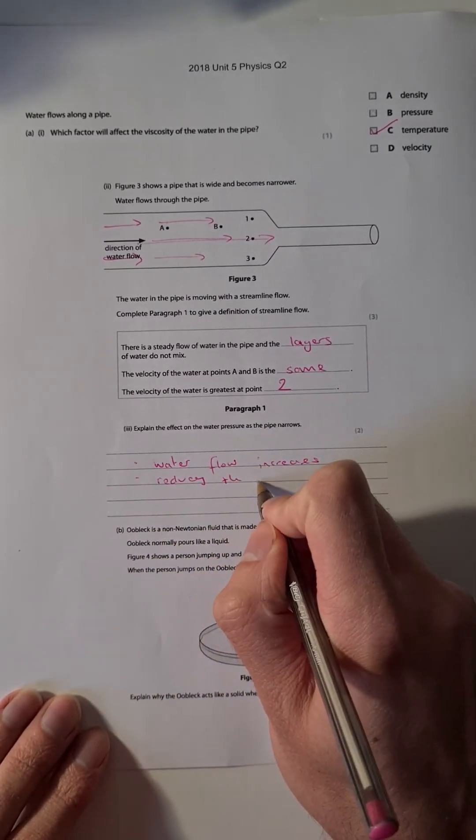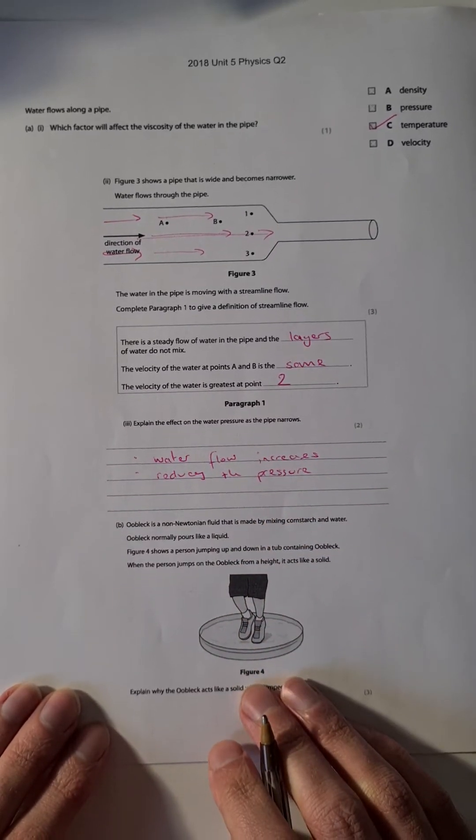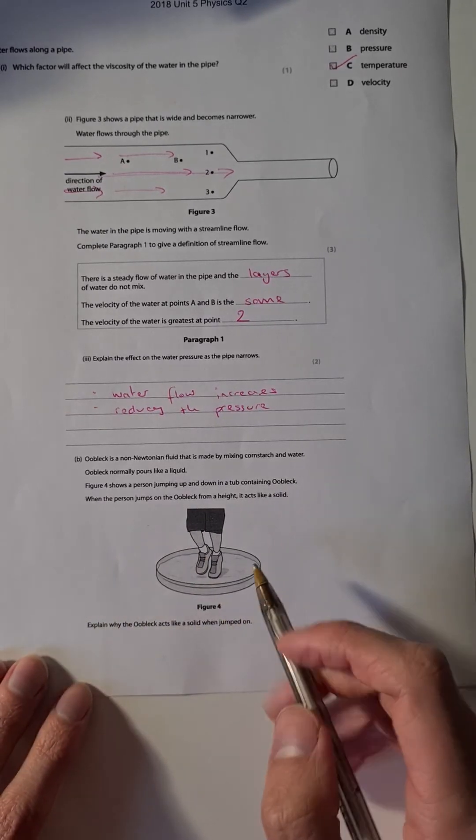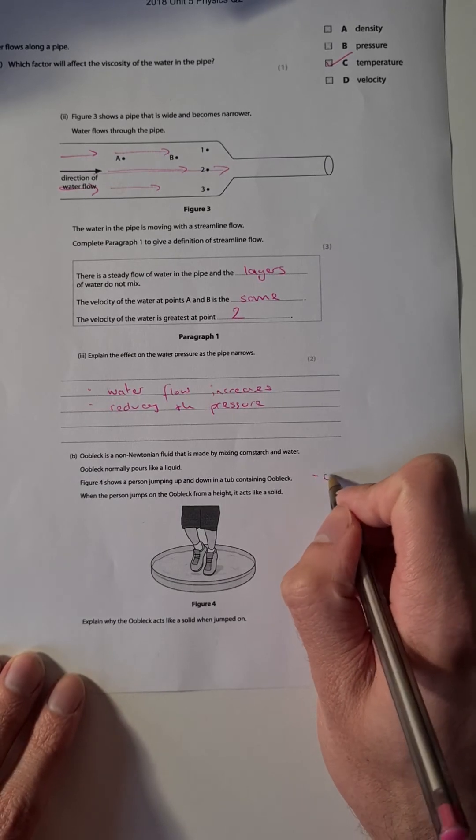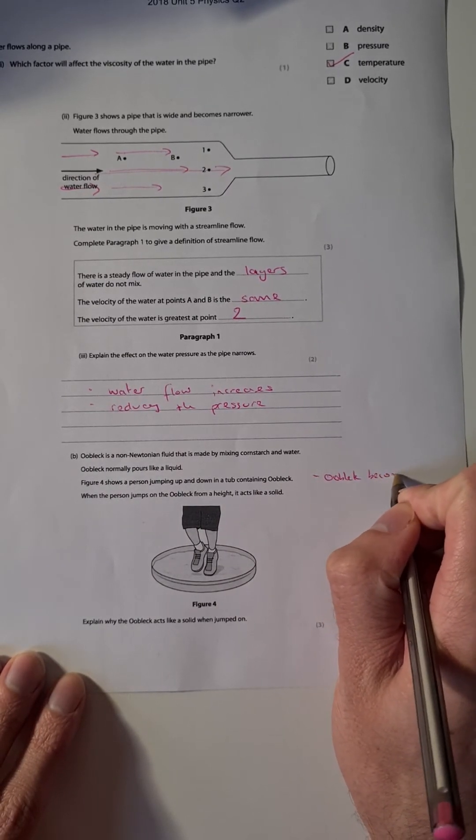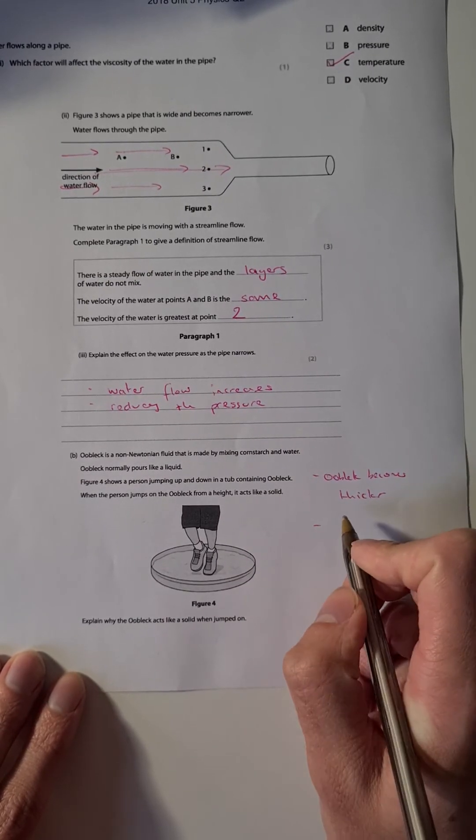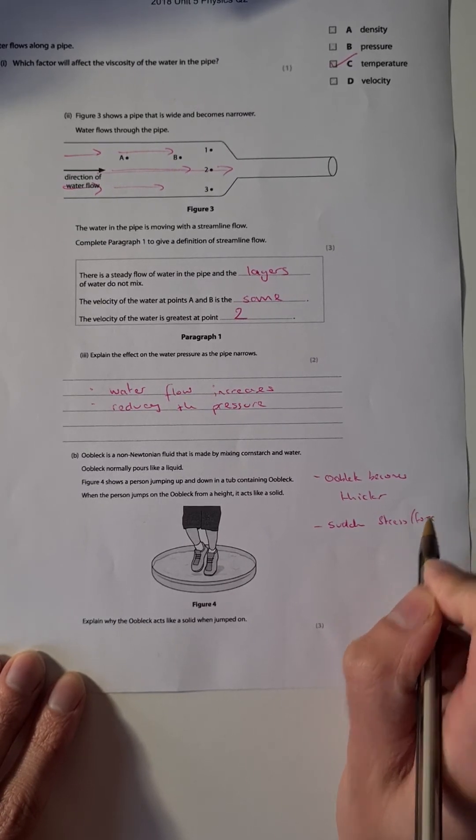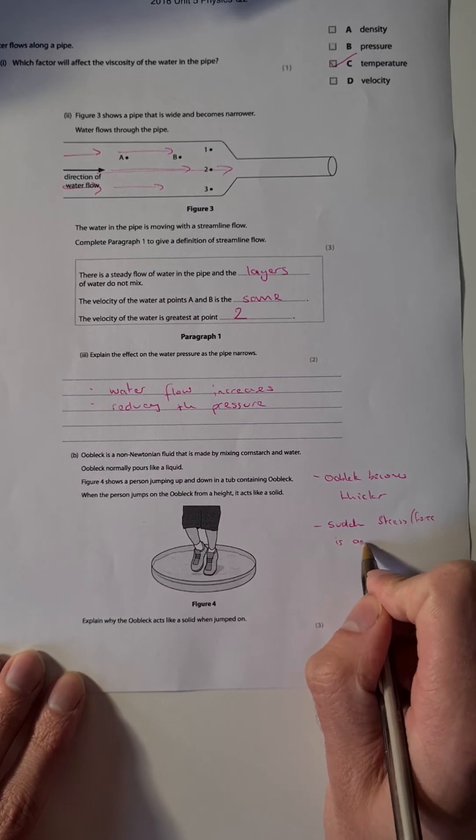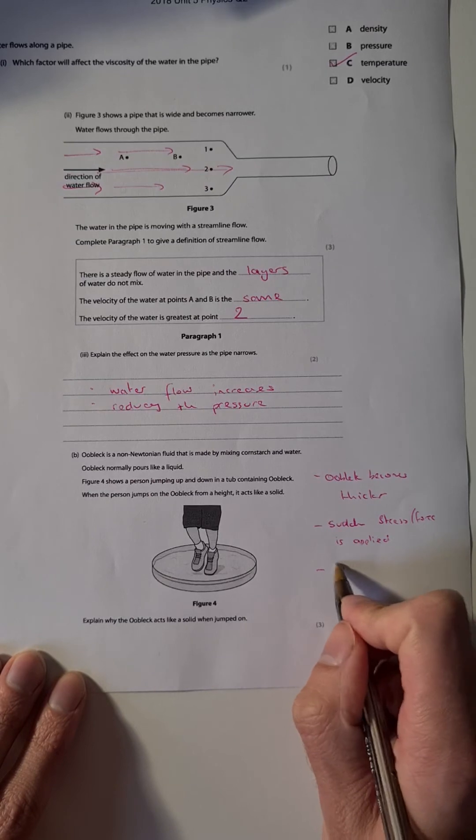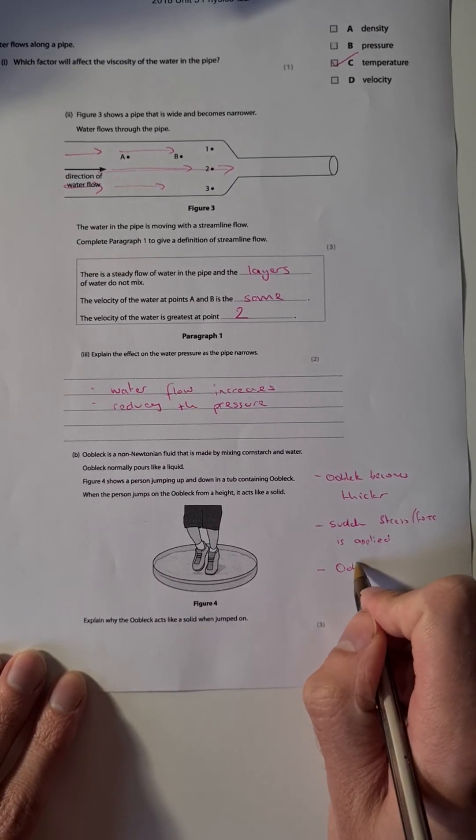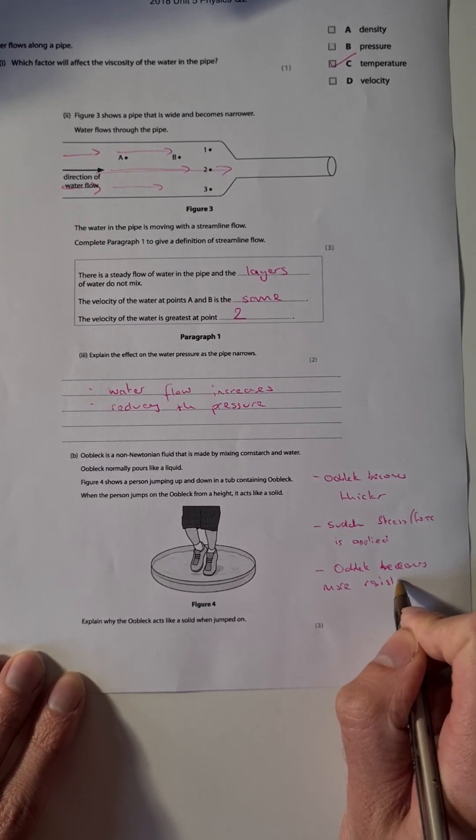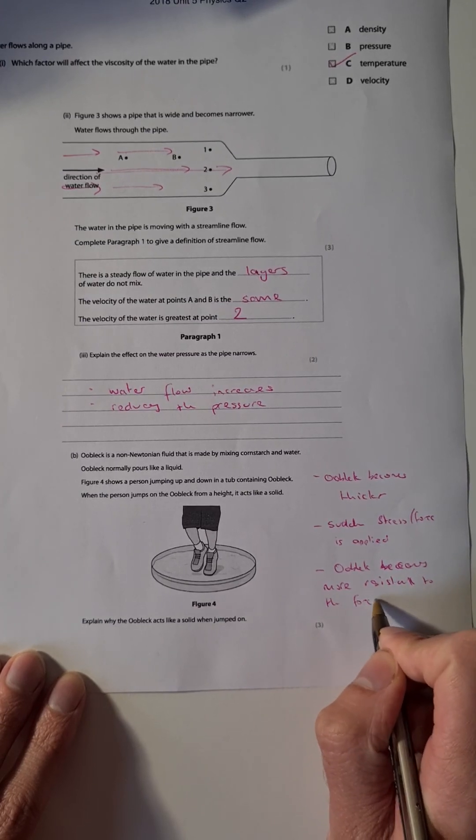Okay, then finally we've got our non-Newtonian fluid. So normally it's liquid, but if you jump on it, it suddenly turns into a solid. So that's what we need to point out - that it becomes thicker if you jump on it. This is because if you apply a stress on it, so sudden stress or force - if we apply that, some stress or force is applied, then it becomes thicker or becomes more resistant. And that's what we see in this thickening up above.